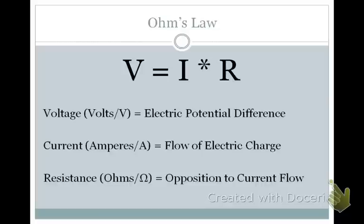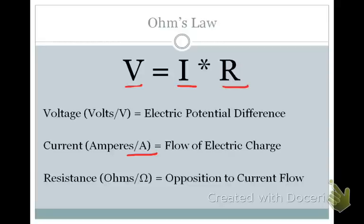From your physics class, you should remember Ohm's law: voltage equals current times resistance. Voltage, measured in volts (though we'll mostly talk about millivolts for the cell), is the electrical potential difference — the difference in charge between one place and another, representing stored potential energy. Current, abbreviated as I, is measured in amperes, and most currents we'll discuss will be milliamps — it's the flow of electric charge. Resistance, or R, measured in ohms, is the opposition to current flow.